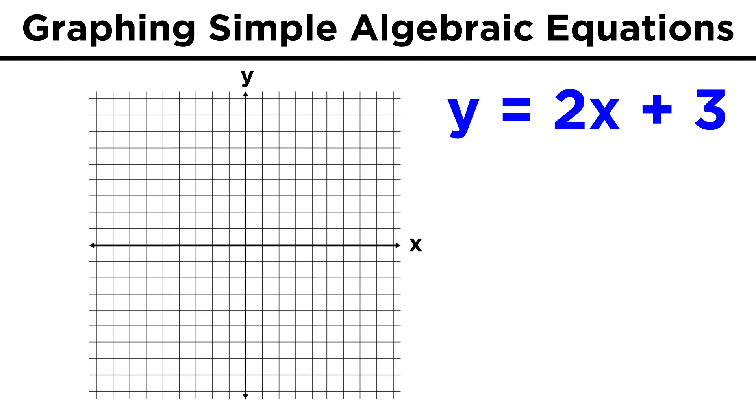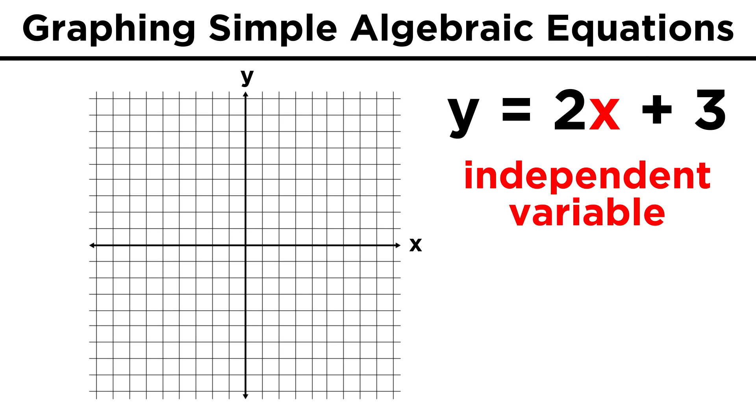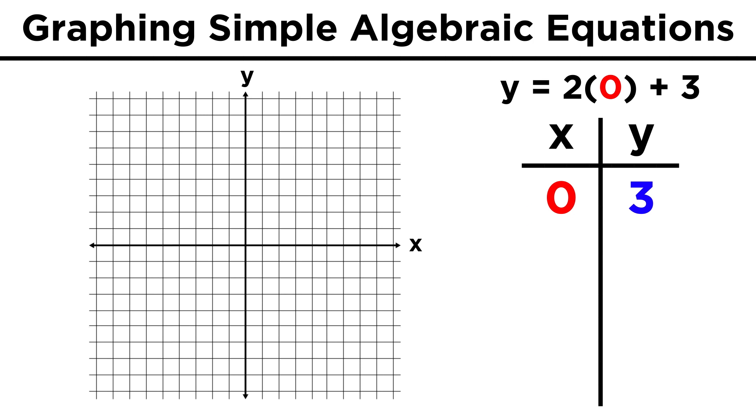Again, we can make a table where we choose any numbers we like for the independent variable x, and see what values we get for the dependent variable y, which depends on the value of x for its own value. When x is zero, y is three.